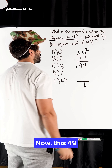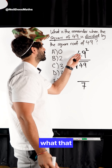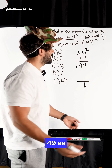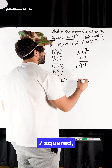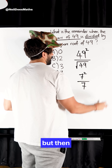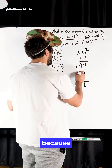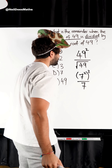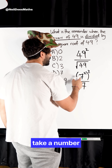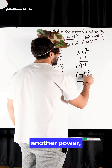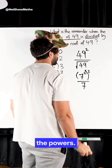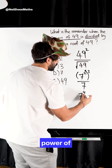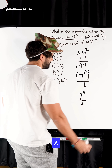Now, this 49 squared — I don't have to calculate what that is and then divide it by seven. I could rewrite 49 as seven squared, but then I need to put a bracket here because I am squaring that value. When you take a number raised to a power raised to another power, you multiply the powers. So this is siete to the power of four, divided by seven.